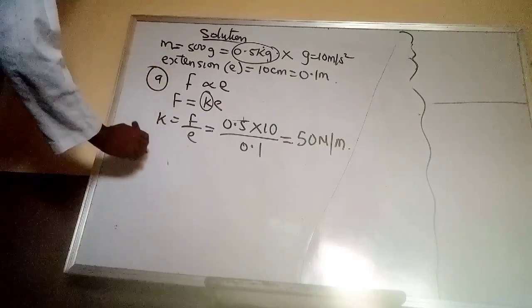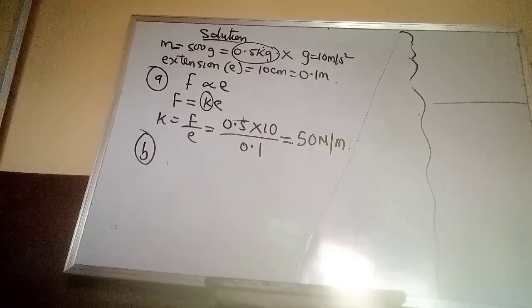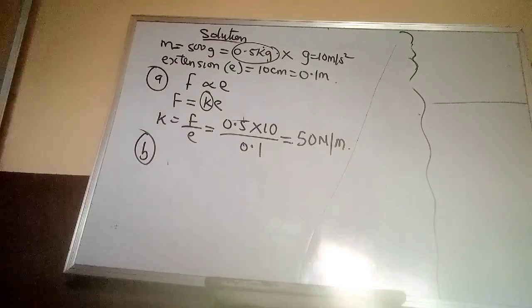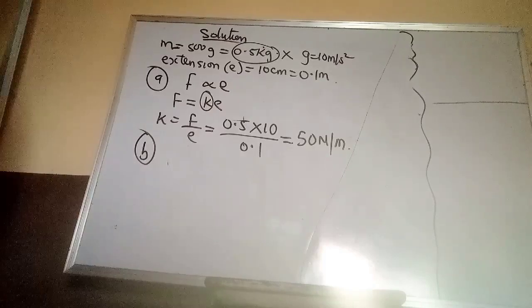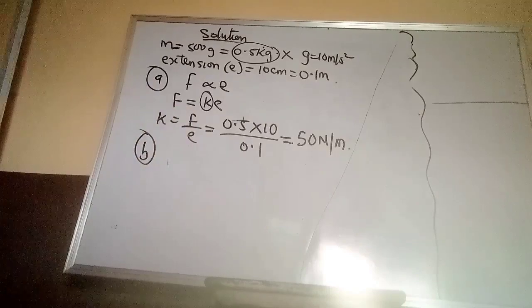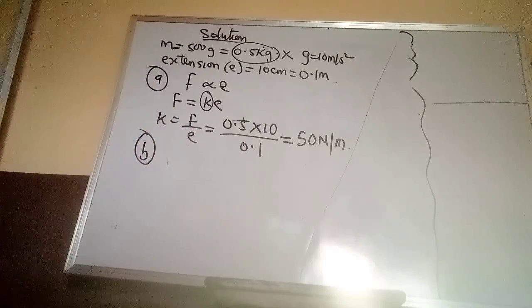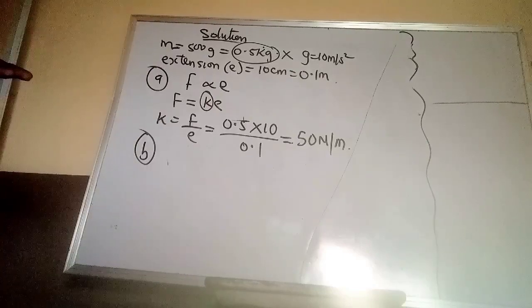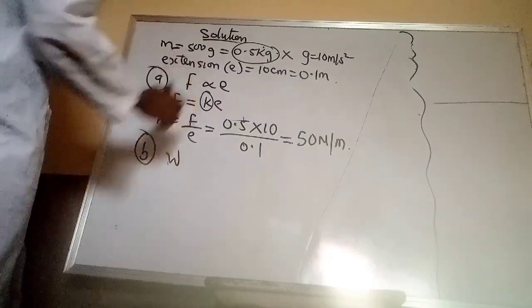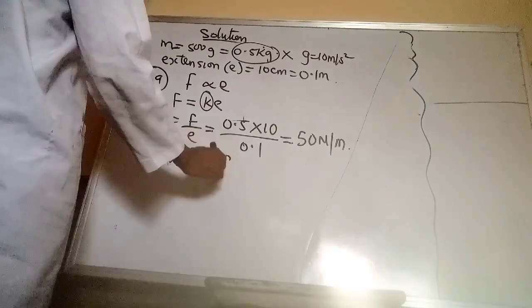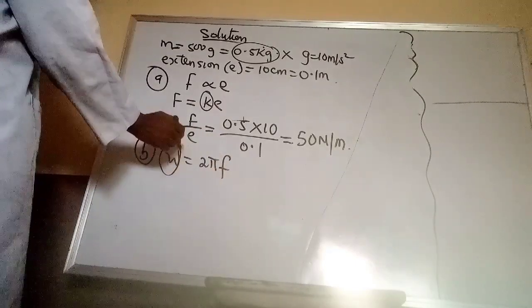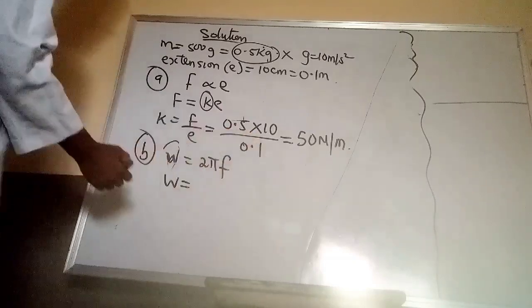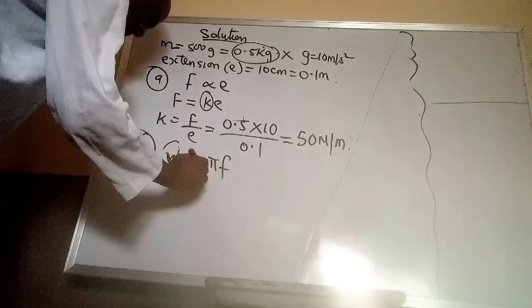Now, to answer question B which says we should find the frequency of oscillation. Under Hooke's law, we want to find the frequency of oscillation. What do we use? Well, since we are given the extension, then we are going to have a look at a formula that has to do with angular velocity, which is angular velocity is equal to 2 pi f.